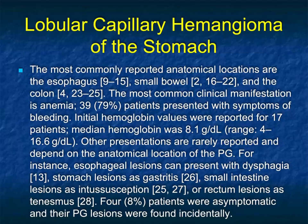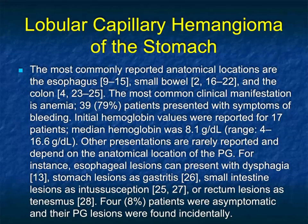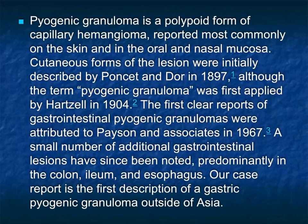It can occur in other parts of the GI tract, from the esophagus to small bowel and colon. Presentation is bleeding. Almost every stomach lesion can bleed — even ectopic pancreas can bleed as well. This lesion was described well over a hundred years ago and is more commonly seen in Asia.